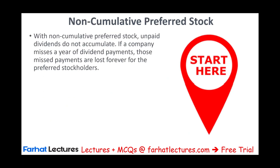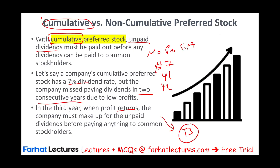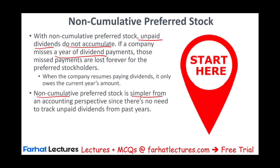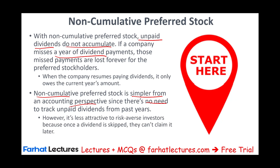If we have cumulative, we also have non-cumulative. Non-cumulative means any unpaid dividend does not accumulate. If the company misses a year of dividend, those are lost forever — they're not going to go back and pay you. Bear in mind that year one and year two missed dividends are not recorded as a liability; they just make a note of it. Non-cumulative is simpler from an accounting perspective with no need to track unpaid dividends, but obviously investors would prefer cumulative. It's less attractive to risk-averse investors because once the dividend is skipped, they cannot claim it later.